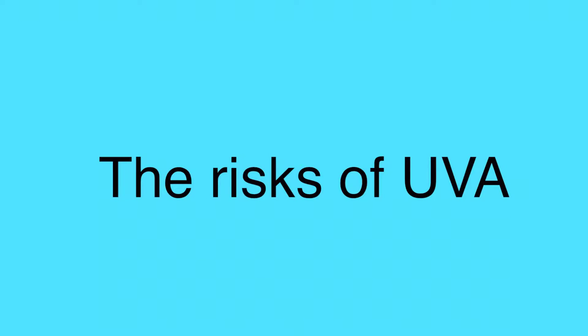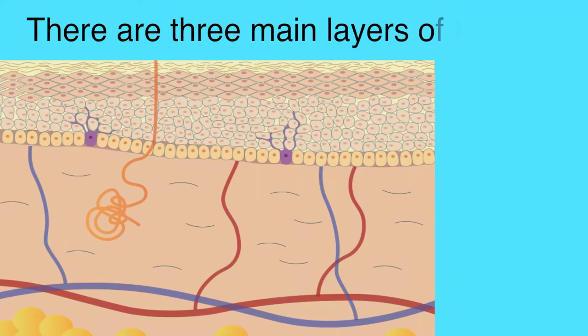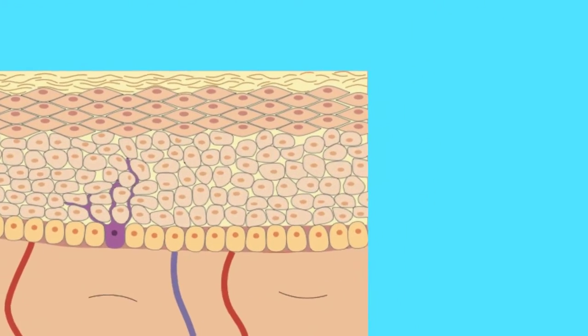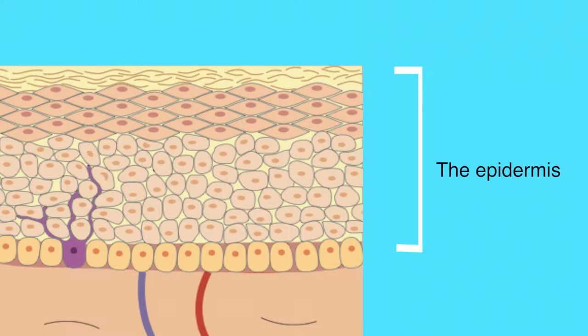This video will highlight the risks associated with UVA radiation. There are three main layers of the skin. The outermost layer is called the epidermis. This is our body's main protection from the outside world.